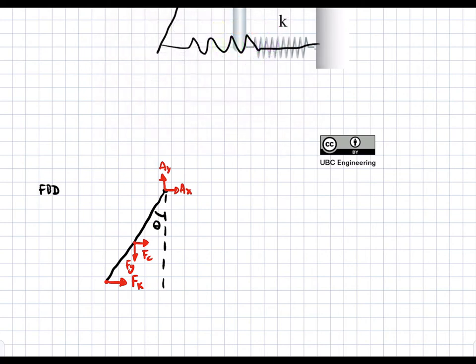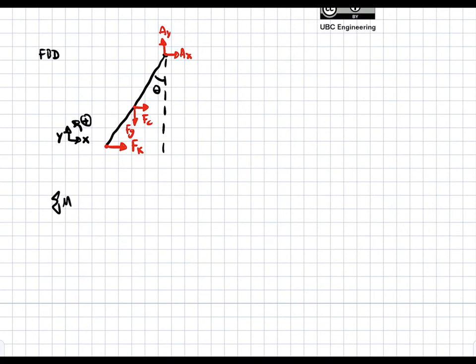Now I'll draw our coordinate system: x is positive to the right, y is positive upward, and positive rotation is counterclockwise. We're going to take the sum of moments and equate this to I·alpha, or I·theta-double-dot. We take moments about point A so we can cancel the reaction forces. Point A is at the top, and G is at the center of gravity.